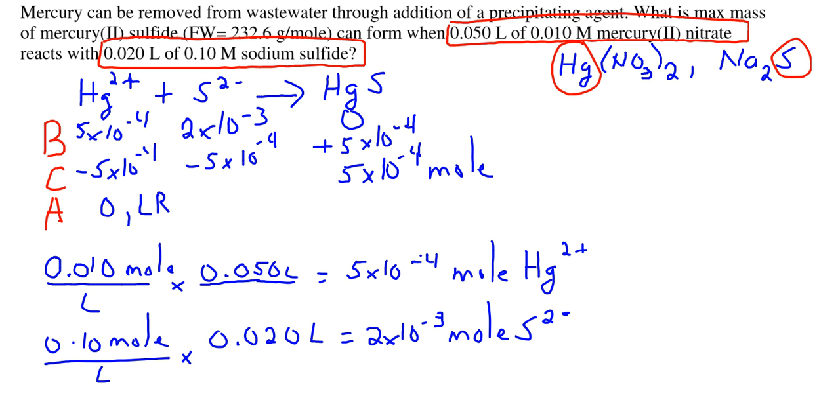And we know the moles of mercury sulfide that form. All we have to do is multiply by the formula weight. So we've multiplied by the formula weight of our product, and we get the mass of the product.